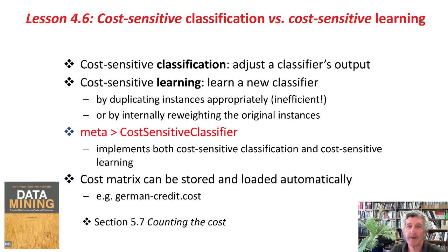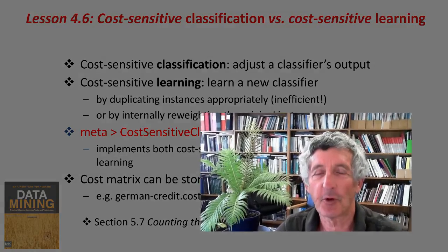Here's what we've learned. Cost-sensitive classification adjusts a classifier's output to optimize a given cost matrix. Cost-sensitive learning, on the other hand, learns a new classifier to optimize with respect to a given cost matrix by duplicating or really internally re-weighting the instances in accordance with the cost matrix. Both of these are done with the Weka classifier cost-sensitive classifier. It implements both of those with a switch to choose which one to use. There are ways in Weka to store and load the cost matrix automatically. In the activity, you're going to look more systematically at the different effects of cost-sensitive learning and cost-sensitive classification.